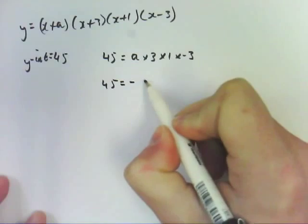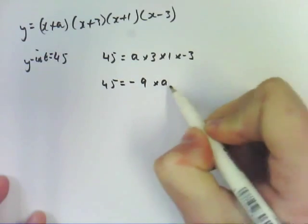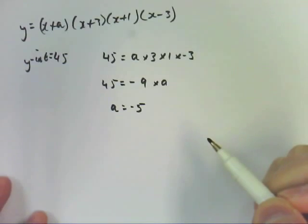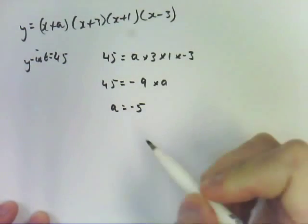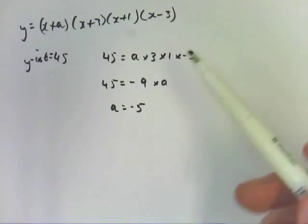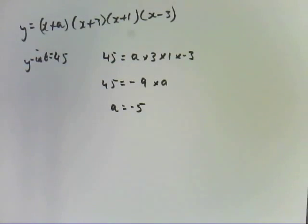So 45 has to equal negative 9 times a. So a is actually negative 5. So it's not as hard as it looks to do that. You don't actually have to graph, you don't have to do anything, you just need to use a little bit of logic. But the trick in that question is I think the four distinct intercepts, the rest is just basic algebra.